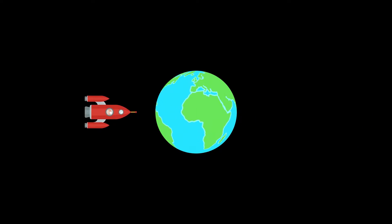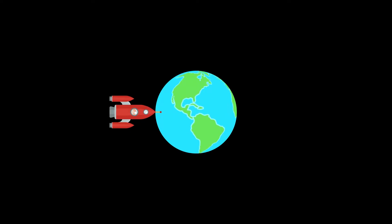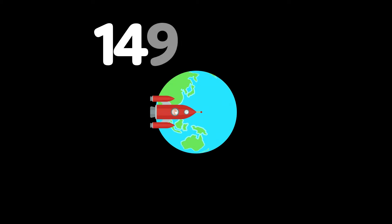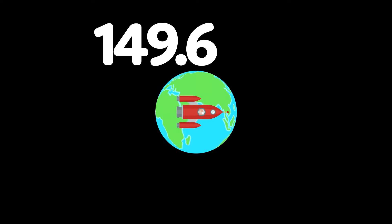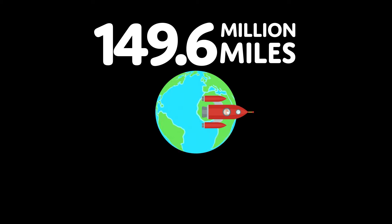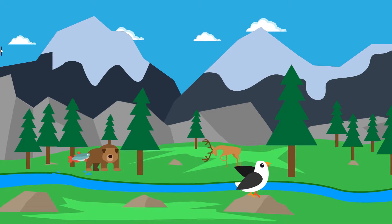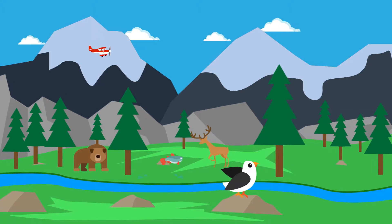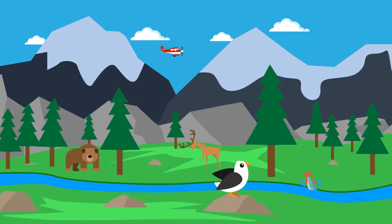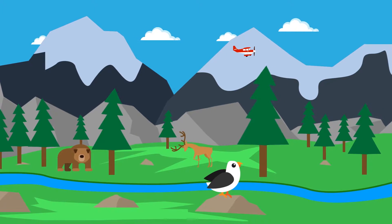Here is our home, Earth. It is 149.6 million miles from the sun. It's the only planet with liquid water and the only planet with light.